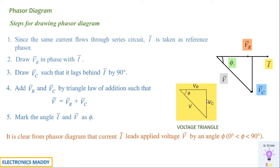One of the most important conclusions from this phasor diagram is that I leads the applied voltage V by an angle somewhere between zero to 90 degrees. The voltage waveform V bar is somewhere between zero and 90 degrees, and that is the reason why we represent I as leading the applied voltage V by an angle equal to zero to 90 degrees. This is one of the most important relationships, and this is how we draw the phasor diagram.